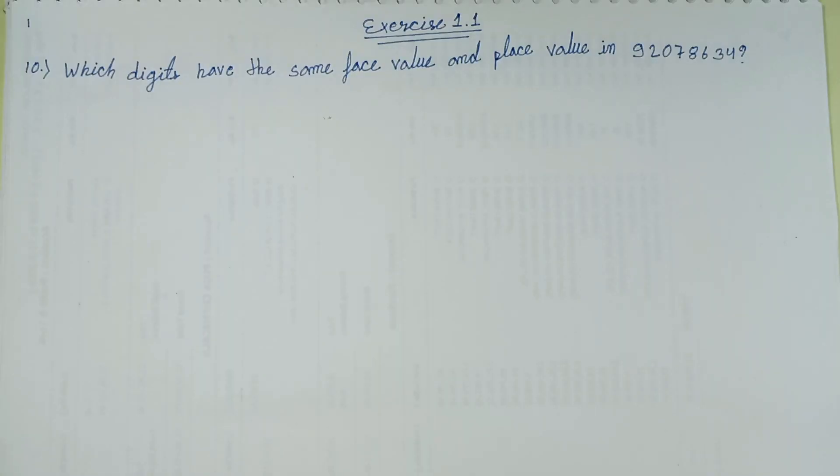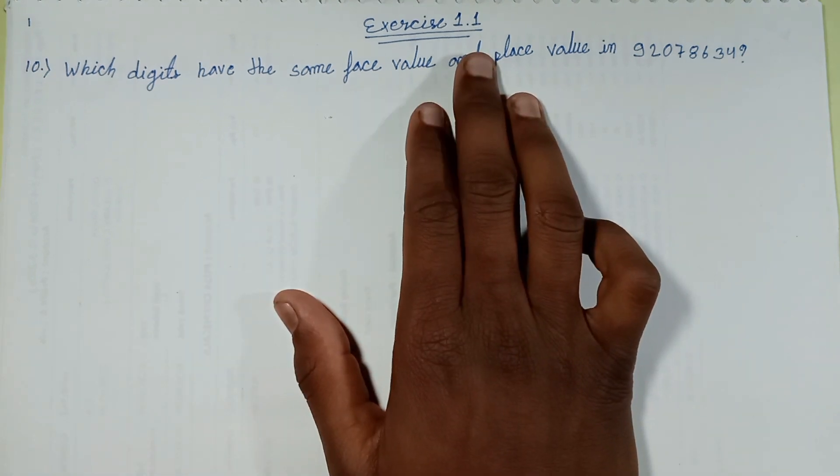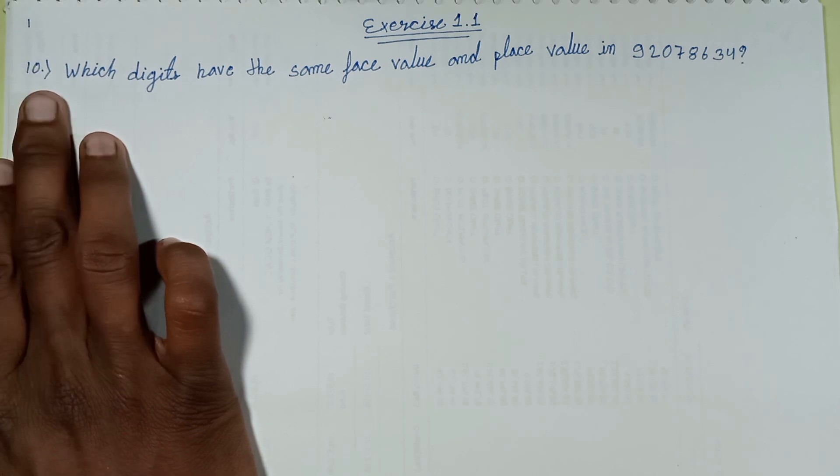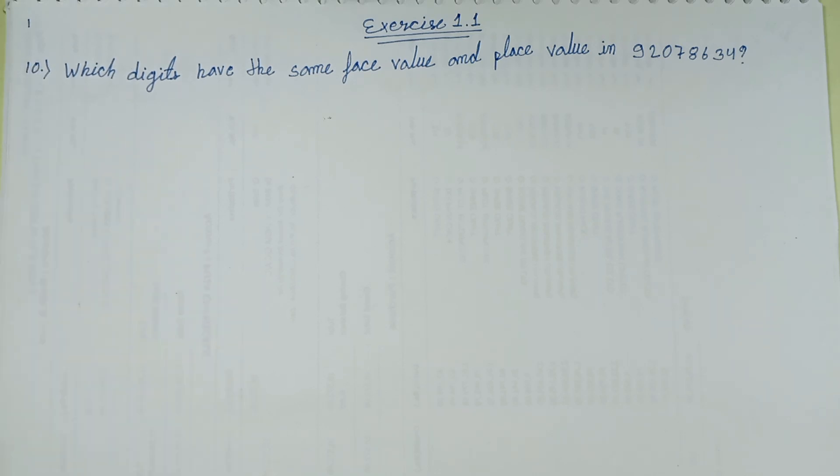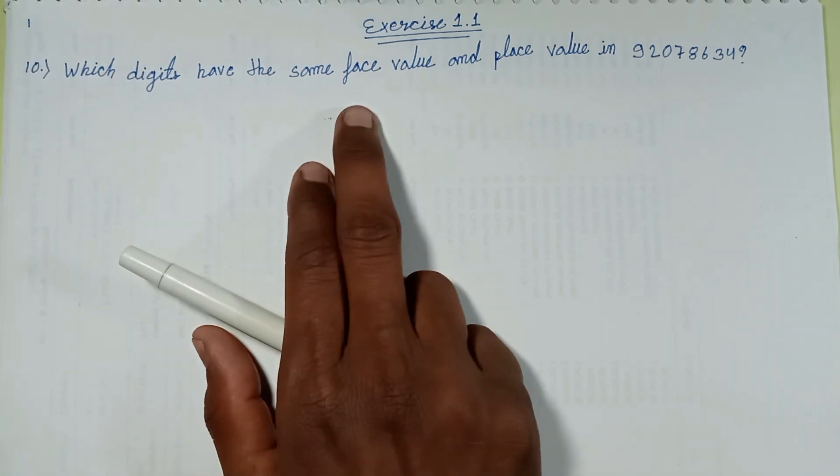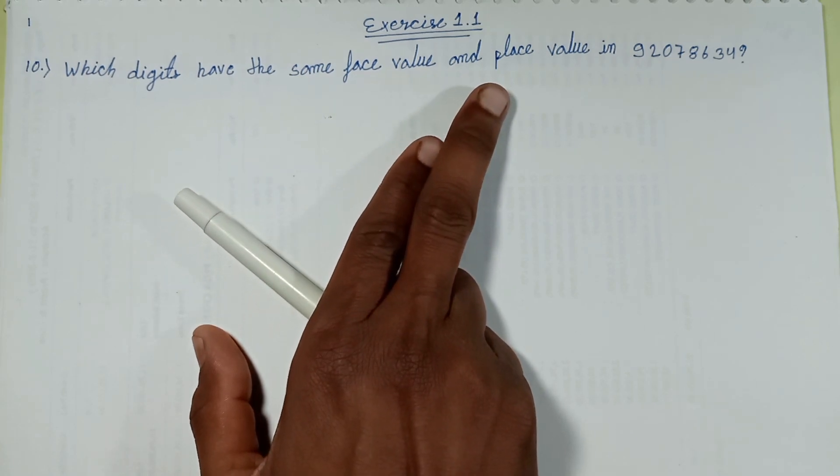Bande Mataram everyone, welcome back to a new episode. This episode discusses question number 10. This question belongs to class 4 R.D. Sharma mathematics book, exercise 1.1, question number 10. Which digit has the same face value and place value in this number?